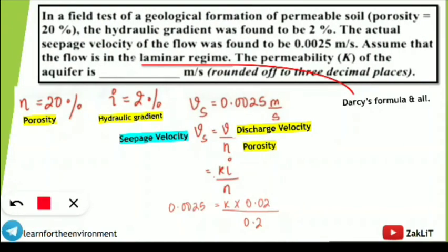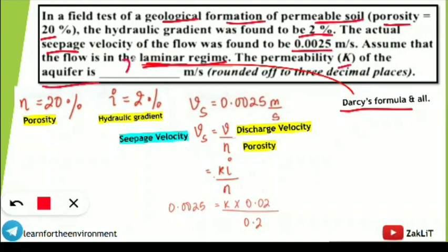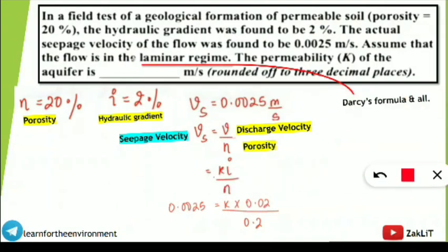Moving to the next question: In a field test of a geological formation of a permeable soil, the porosity is given as 20%, the hydraulic gradient was found to be 2%, and the actual seepage velocity of the flow was 0.0025 m/s. Assume the flow is in the laminar regime. Find the permeability k of the aquifer.